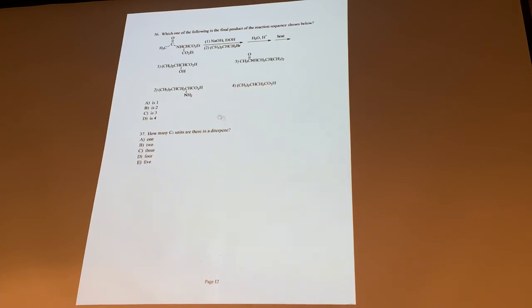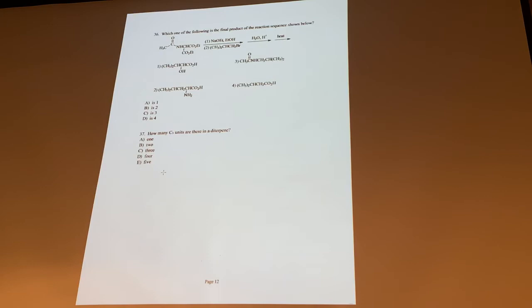Terminology — terpenes. How many C5 units? A hemiterpene is one C5 unit, a terpene has ten carbons (two C5 units), and a diterpene would have four C5 units. The Birch reduction on question 38 — we did not cover that, so don't worry about it. Cyclopropanation — we did not cover that either.